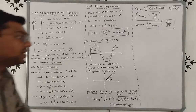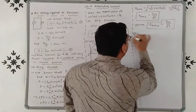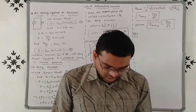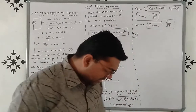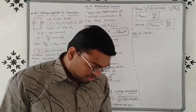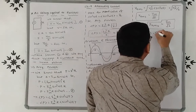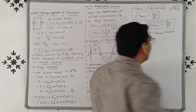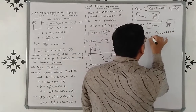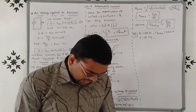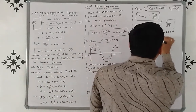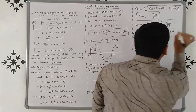Example 1: A 100 Ω resistor is connected to a 220 V, 50 Hz AC supply. So resistance R = 100 Ω, Vrms = 220 V, and frequency f = 50 Hz. We have to find the RMS value of current in the circuit.